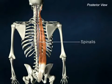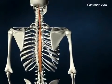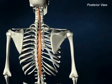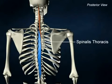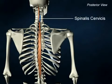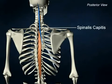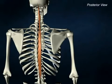The spinalis forms the medial most column, and when most developed, it has three parts, as do the other muscles. These are spinalis thoracis, spinalis cervicis, and spinalis capitis. From their origins, spinalis fibers run superiorly to insert onto vertebrae, the ligamentum nuchae, and the skull.